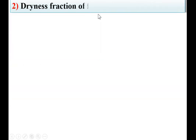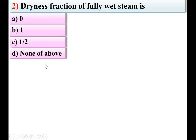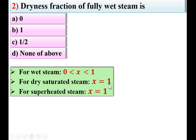Next: dryness fraction of fully wet steam is option 0, 1, 1/2, or none of the above. For wet steam, dryness fraction is between 0 to 1; for dry saturated steam X = 1; for superheated steam X = 1. But here it is fully wet steam, meaning there are no dry steam particles, so dryness fraction is 0. A is the right answer.